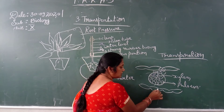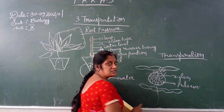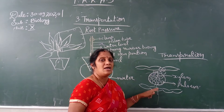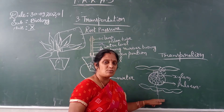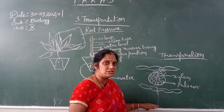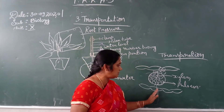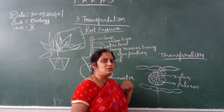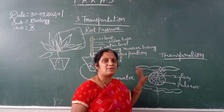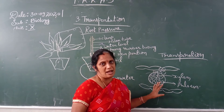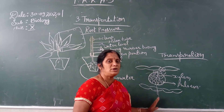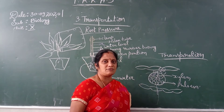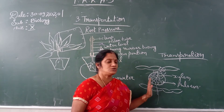Since the leaves are connected to the roots, the water moves upward continuously due to cohesion — the force of attraction between water molecules. As water continuously evaporates from the leaves, it creates a pull that drives the upward movement of water from the root level to the shoot level.